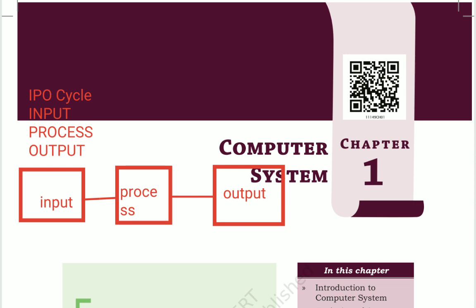The word 'computer' is derived from 'compute', which means to calculate. Computer is an electronic machine, but it will not perform independently — it depends on the user. It will do what it is instructed to do in specific terms.